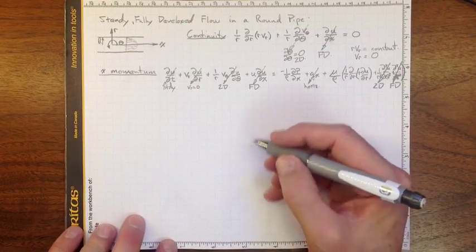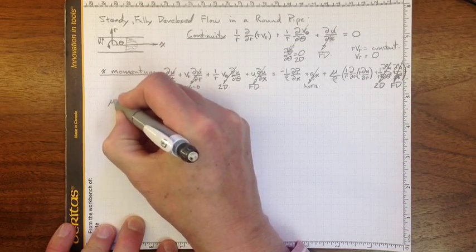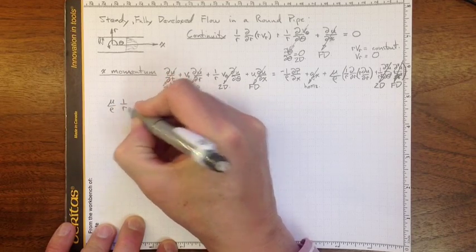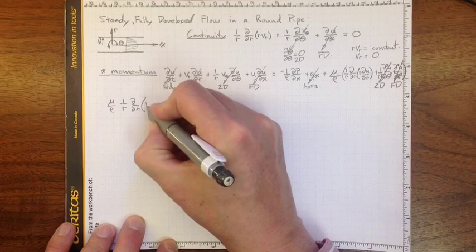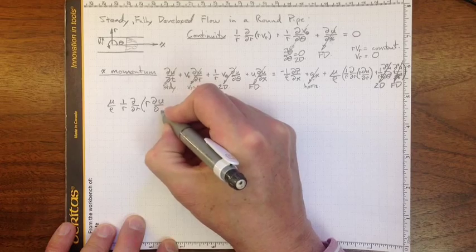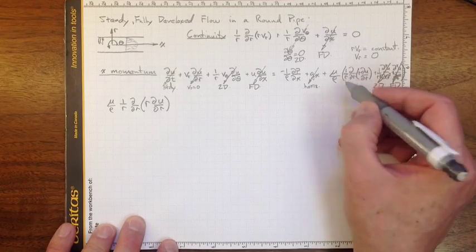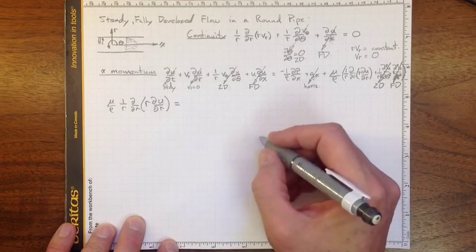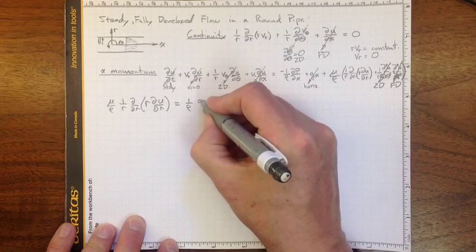That's as we would have expected. Getting rid of the crossed-out terms, we wind up with: (mu/rho) · (1/r) · d/dr(r · du/dr) = (1/rho) · dp/dx. This is our simplified governing equation relating the viscous shear in the radial direction to the axial pressure gradient.